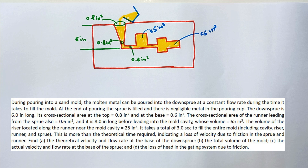During pouring into a sand mold, the molten metal can be poured into the downhill sprue at a constant flow rate during the time it takes to fill the mold. At the end of pouring, the sprue is filled and there is negligible metal in the pouring cup.